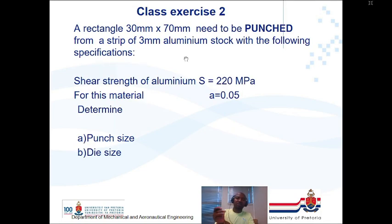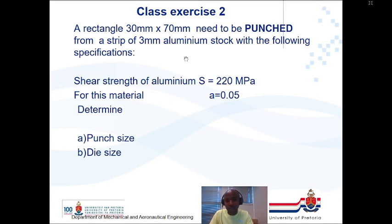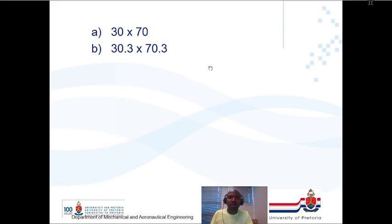Class exercise two: The same problem but now as a punching operation. Determine the punch size and die size. Note that the force is the same for both blanking and punching operations with the same dimensions. The answers are: punch size 30 mm × 70 mm, die size 30.3 mm × 70.3 mm.